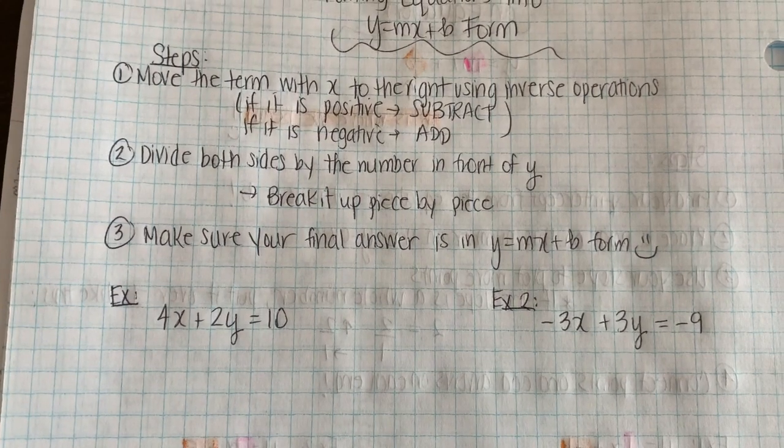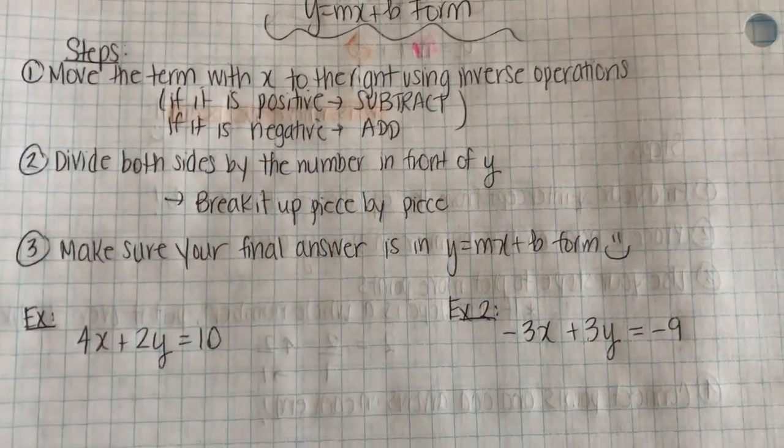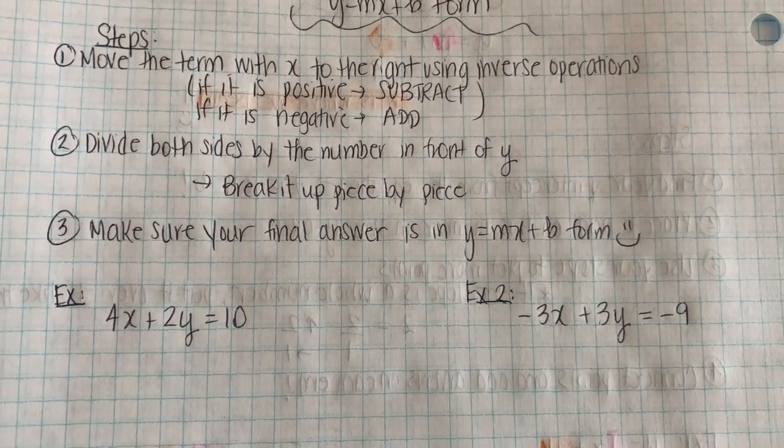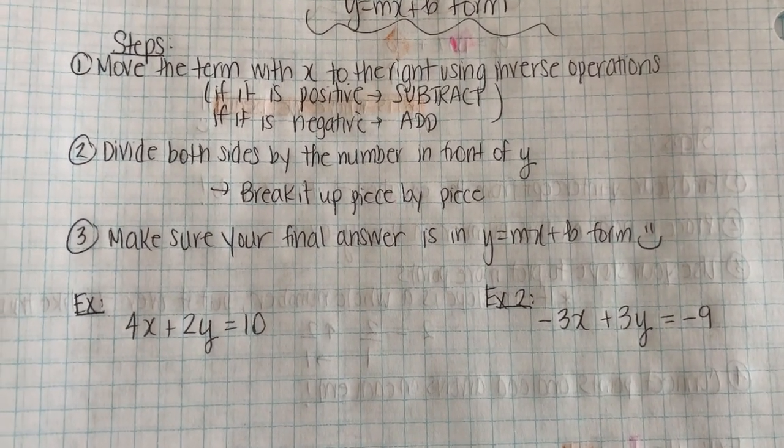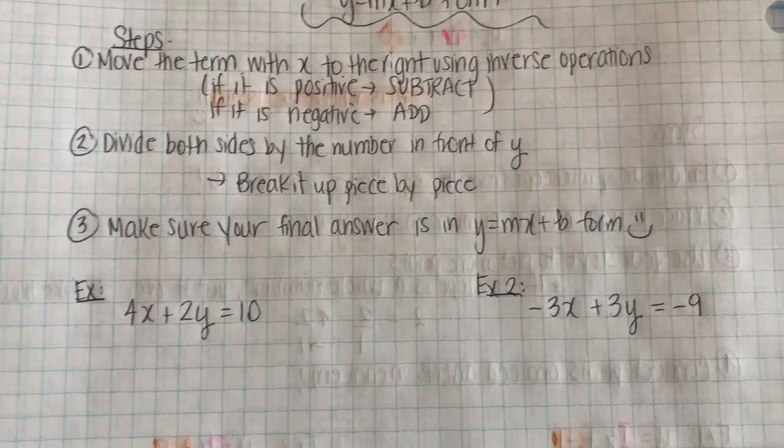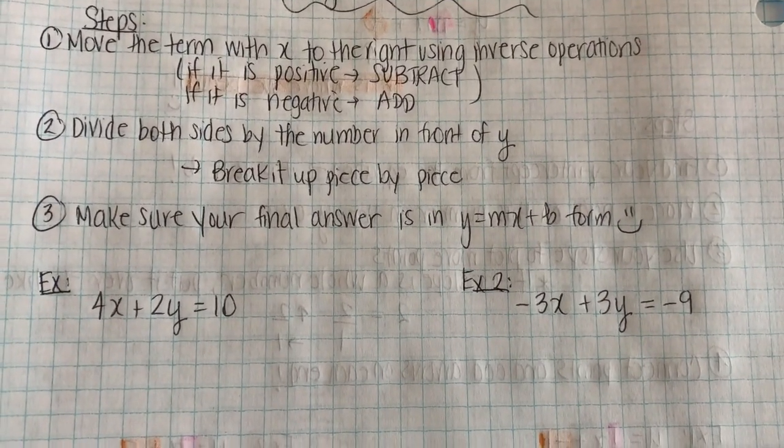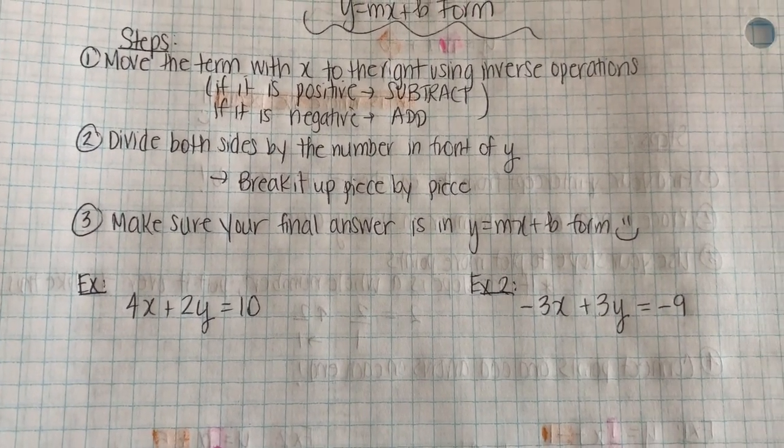After you've done that, you're going to be left with the term that has the y in it, but it most likely has a number in front of it or coefficient. So your second step is going to be to divide both sides by that number so that you can get y by itself. This is going to result in you having to divide two terms by that number.